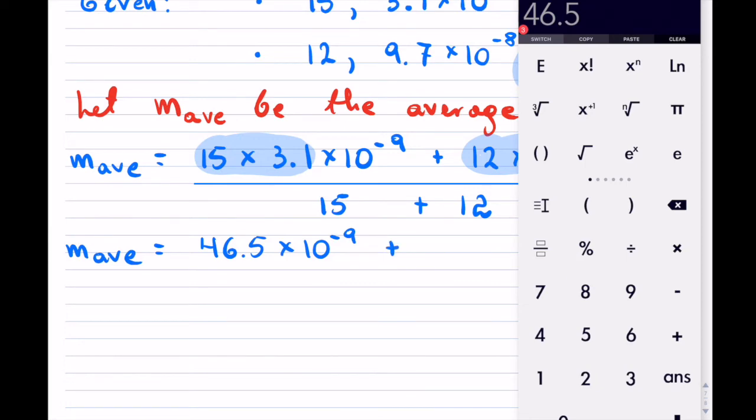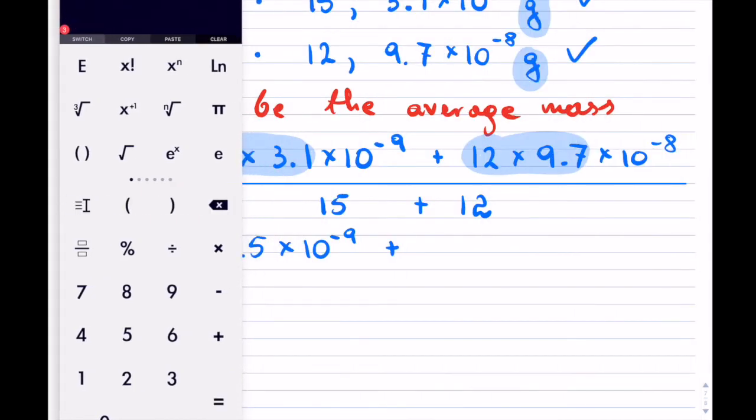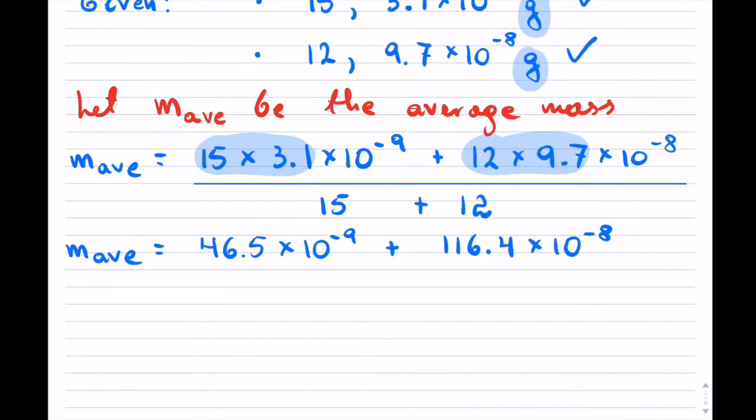Plus the second one, we have 12 times 9.7, and that is 116.4 times 10^-8, divided by our bottom which is 27 in total.